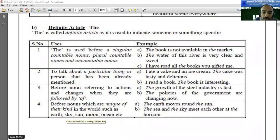Let's see the fourth use. Before nouns which are unique of their kind in the world, such as earth, sky, sun, moon, ocean, etc. So whatever nouns are there, and those nouns if they are unique in kind, unique of their kind, after or before that nouns generally we use 'the' as an article. Earth is unique, earth is also we can call it as unique. That's why we have to use 'the' as an article before earth.